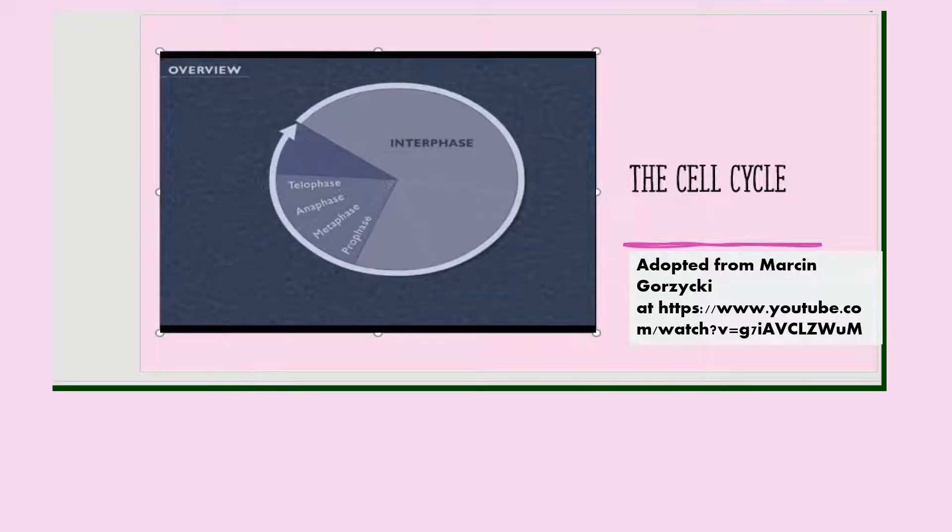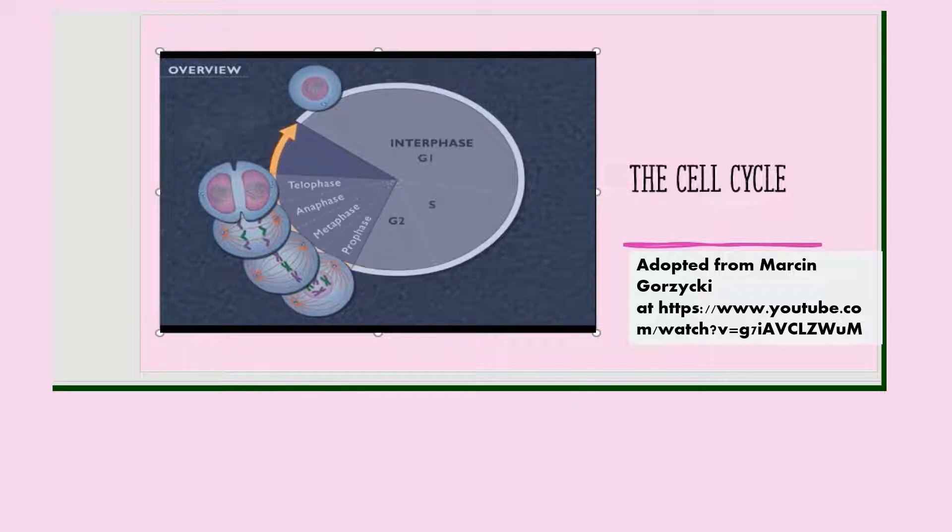To summarize the entire cycle, G1, S, and G2 phases occur during interphase while the cell is growing and preparing to divide. Mitosis or the division of the nucleus consists of four phases: prophase, metaphase, anaphase, and telophase. And in these phases, duplicate copies of the chromosomes are split equally. Finally, the cell cytoplasm divides during cytokinesis and results in the formation of two genetically identical daughter cells.